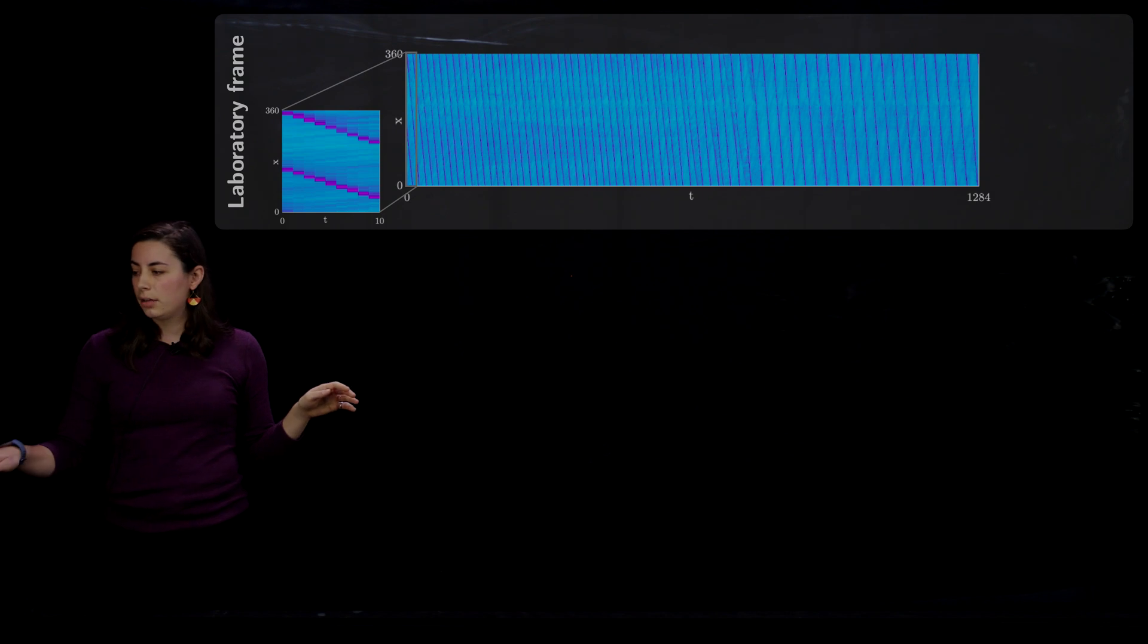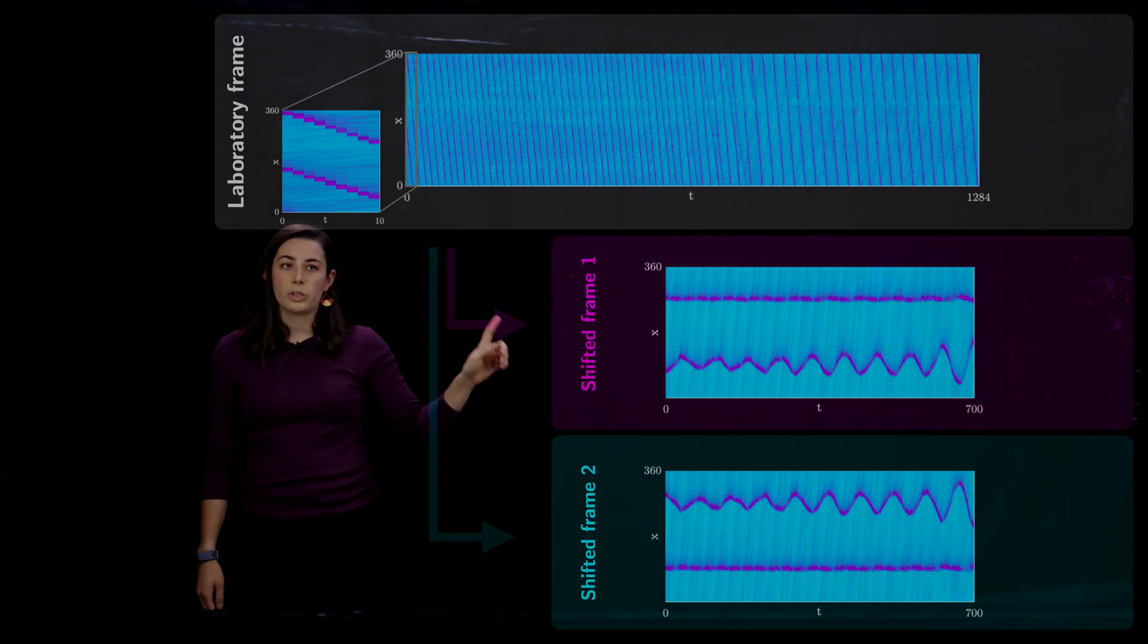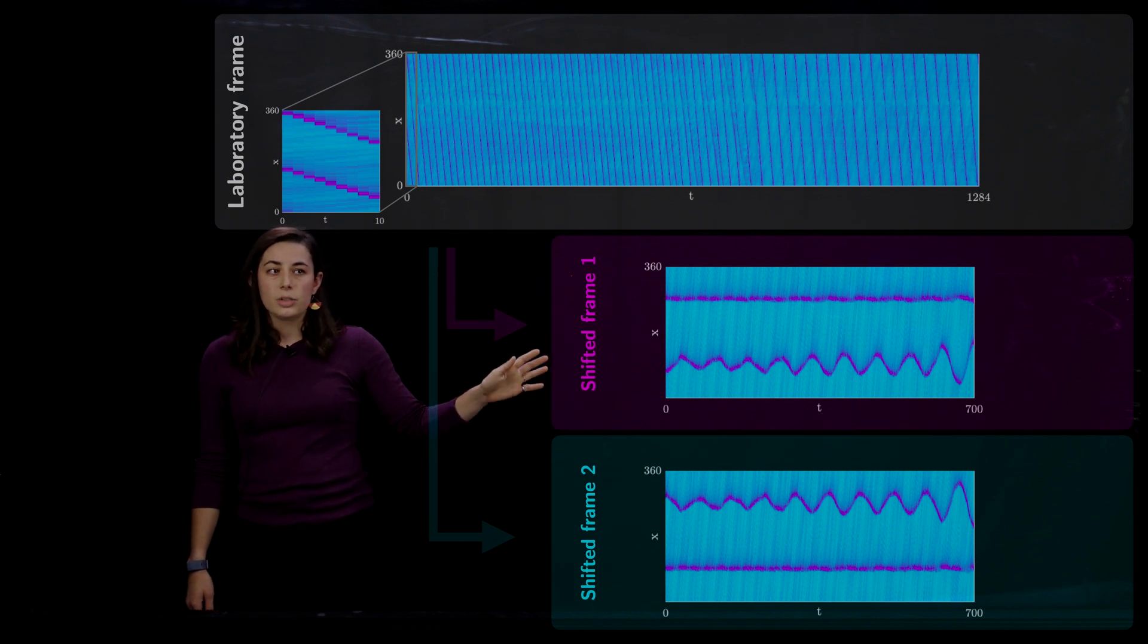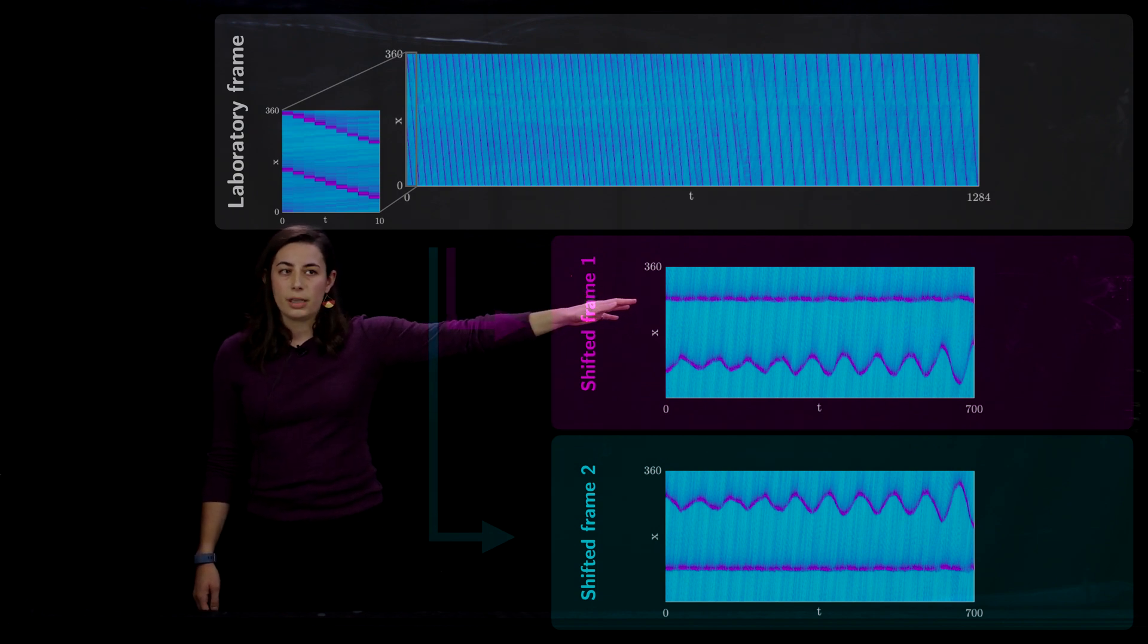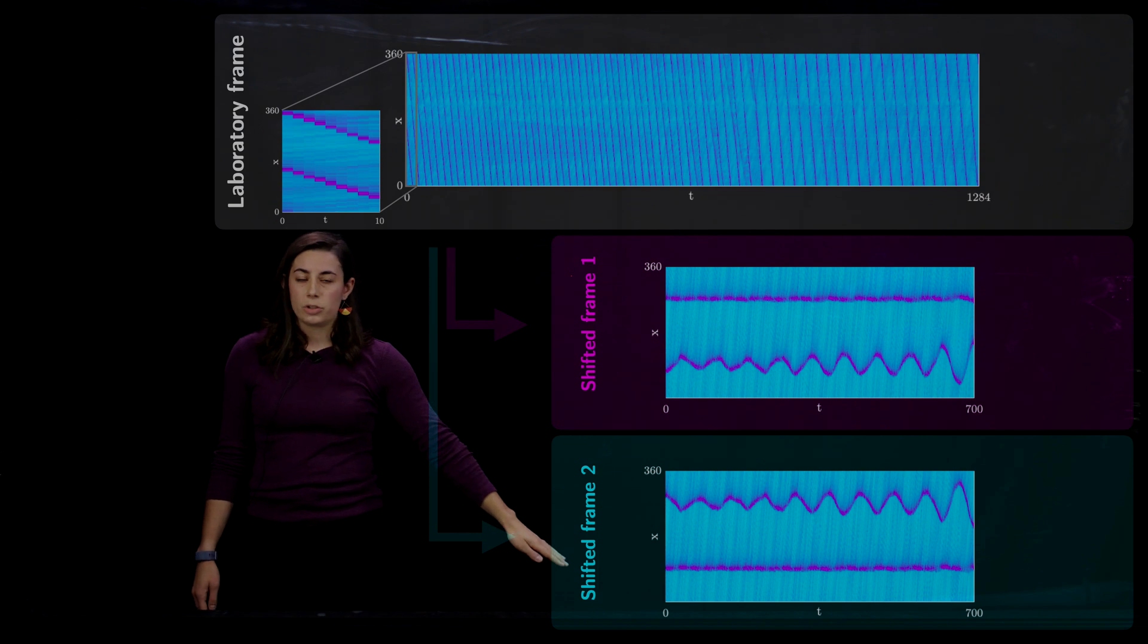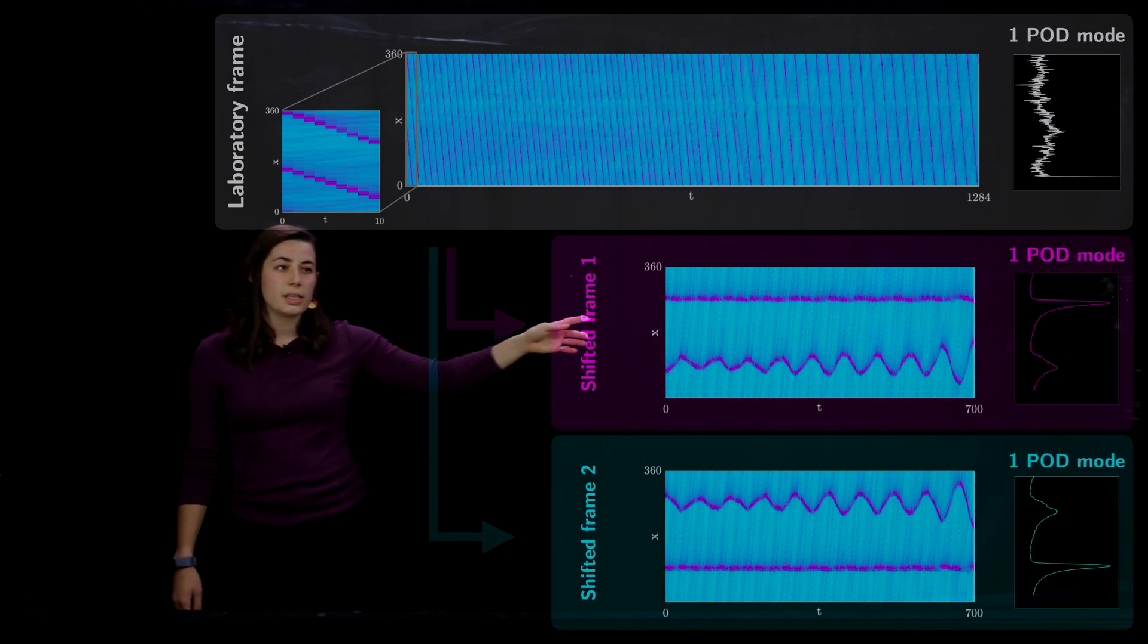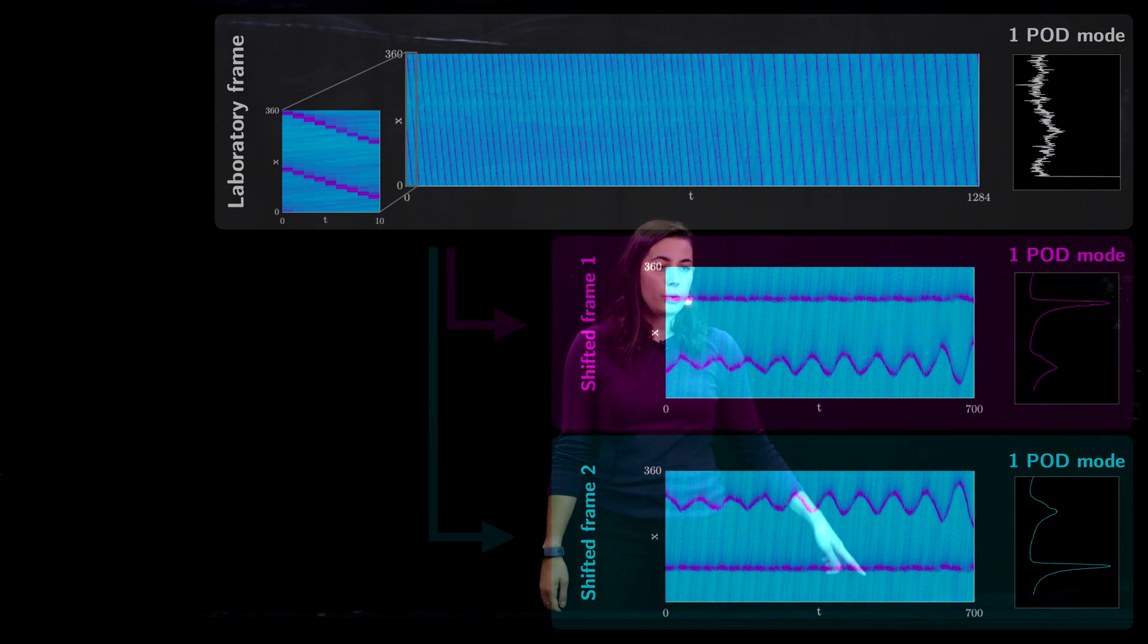When we apply our untwist method, we can shift the data into each of these traveling wave frames with respect to the top wave or the bottom wave. And this is what we obtain. So now we have a straightened wave, which will be amenable to POD, and we can find a mode that will represent this shock wave well, and then the bottom shock wave well. So our first POD mode shows that we actually capture the shock front extremely well for both of these examples. And this has a physically relevant meaning.